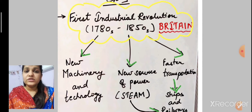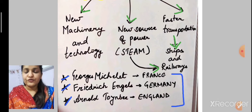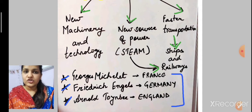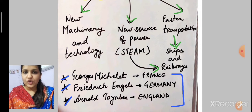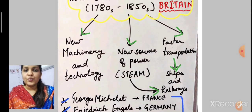The term 'industrial revolution' was used by various scholars — firstly by George Michelet in France, Frederick Engels in Germany, and Arnold Toynbee in England.